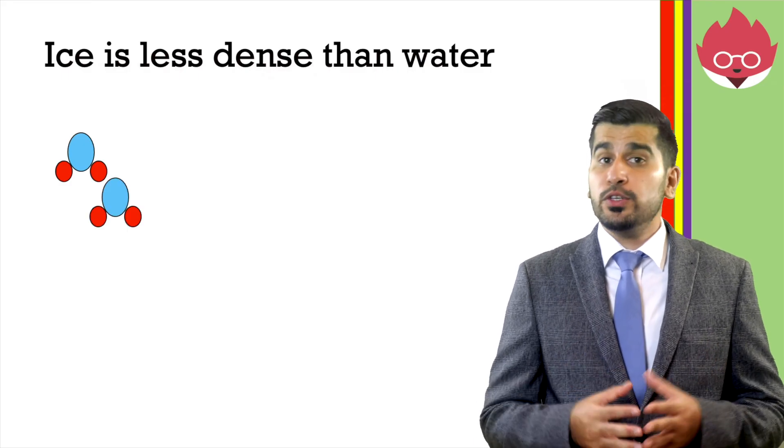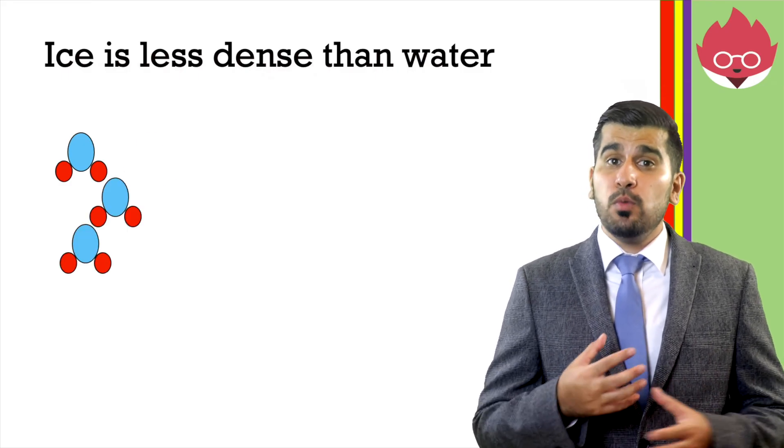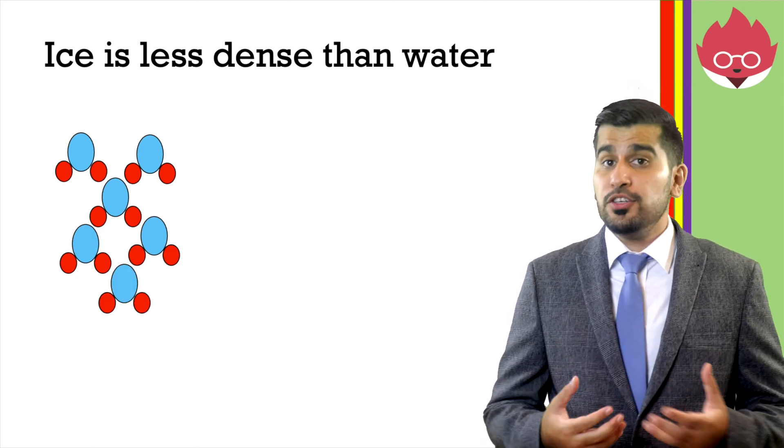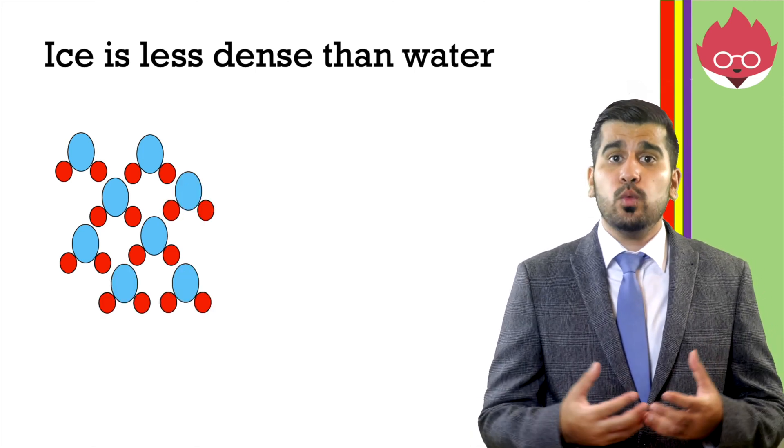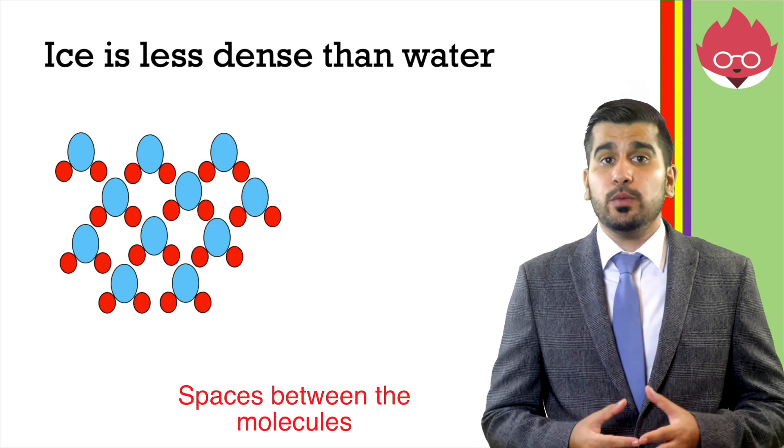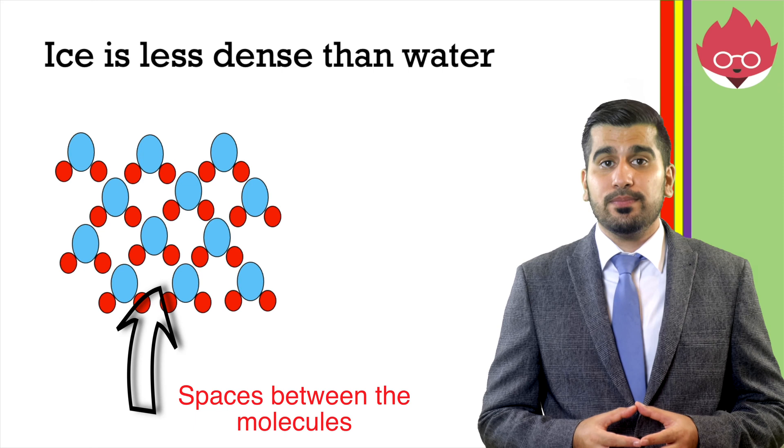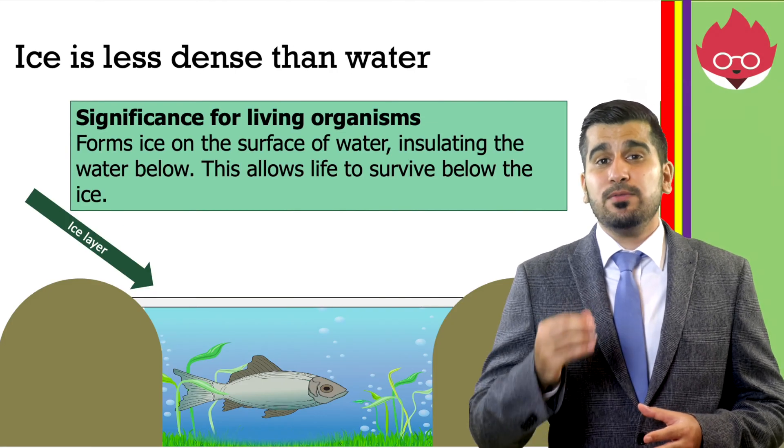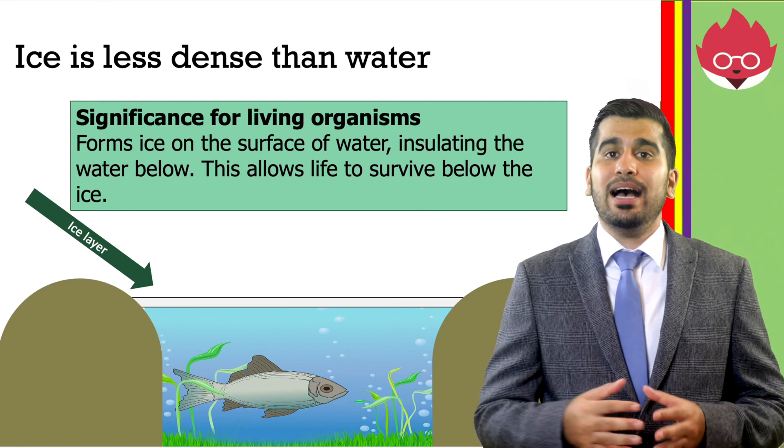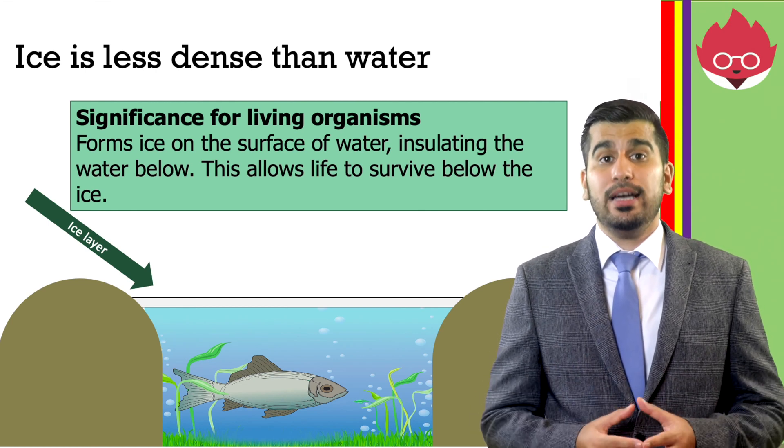Let's look at why. As the temperature falls, this reduces the kinetic energy, so more hydrogen bonds are formed between the water molecules. The formation of these hydrogen bonds prevents water from packing closely together, resulting in a rigid structure with spaces between the molecules. The significance for living organisms is ice forms on the surface of water. This insulates the water below, allowing life to survive below ice.